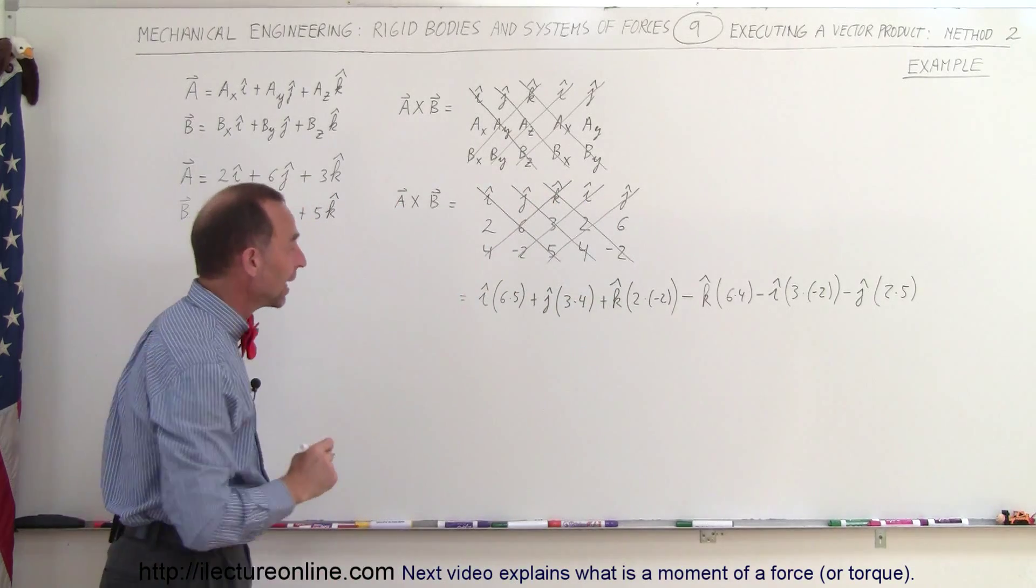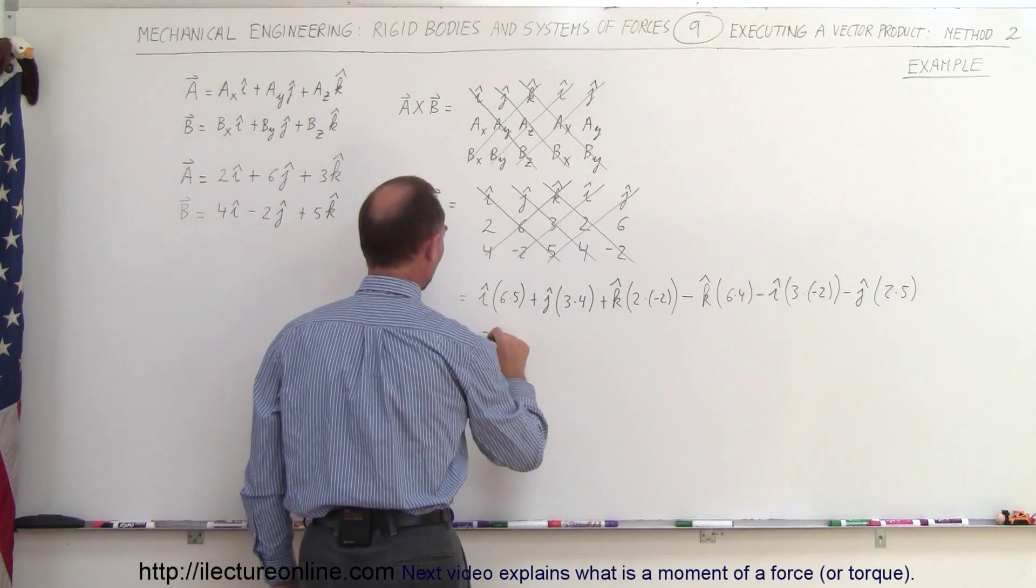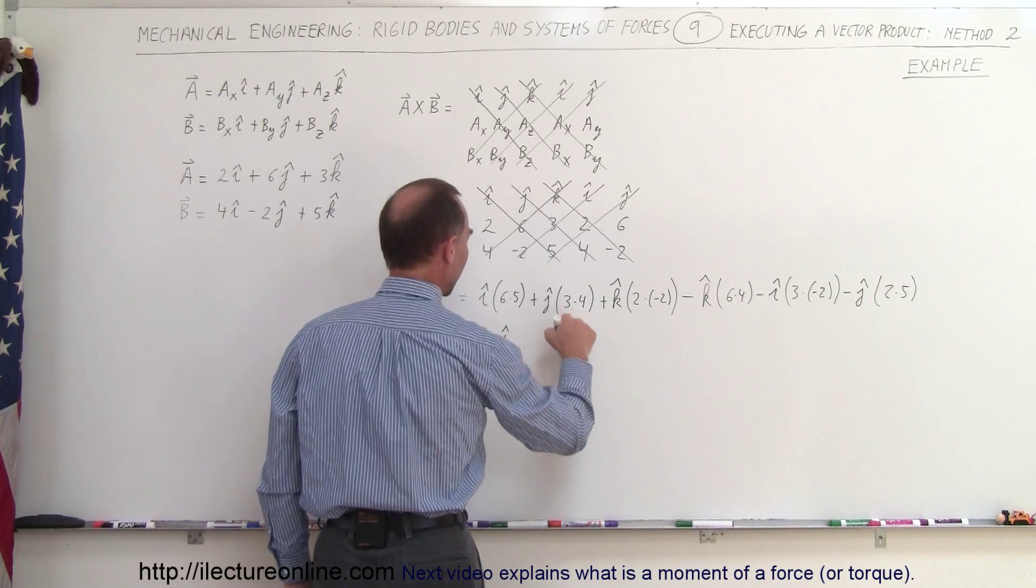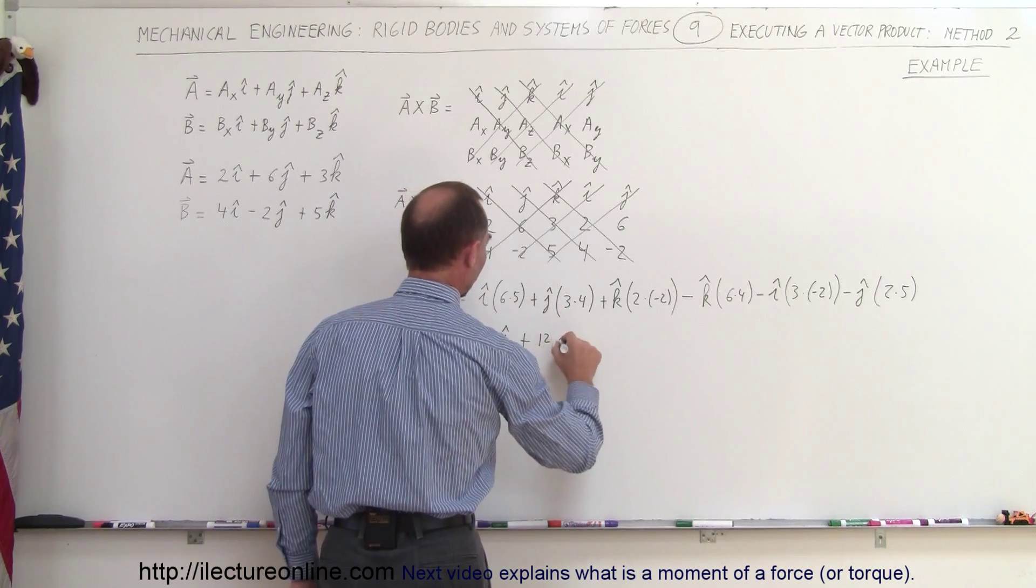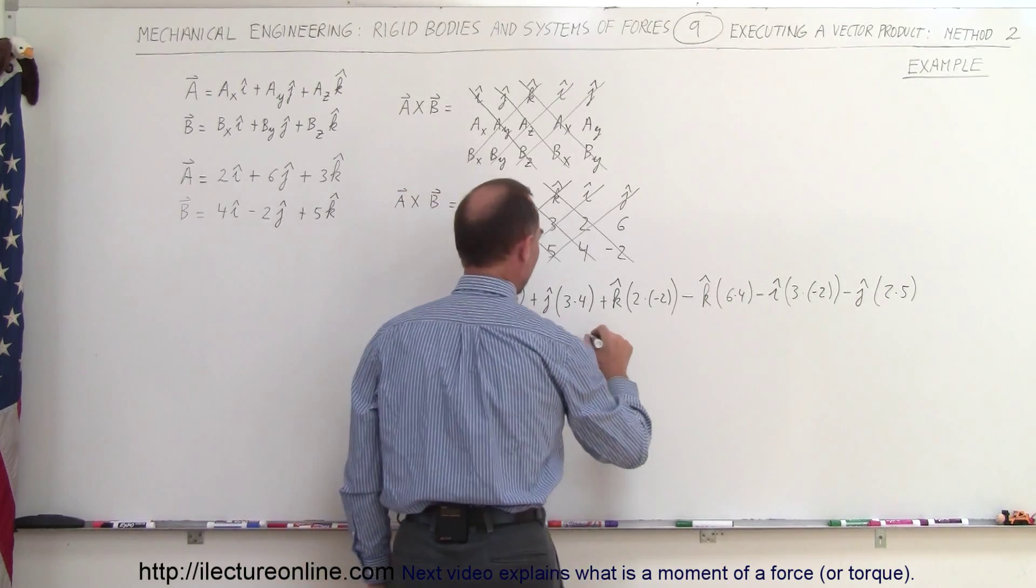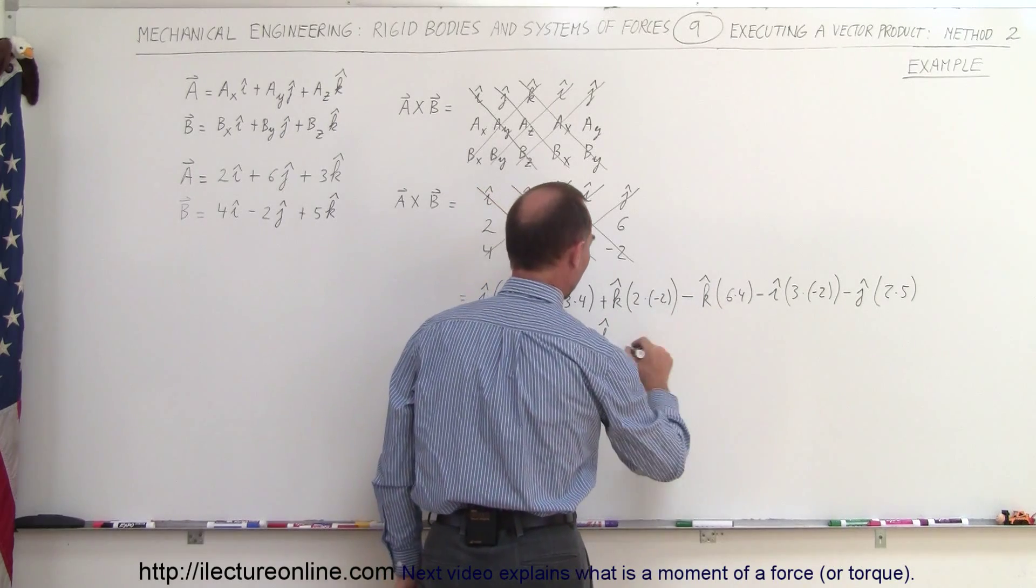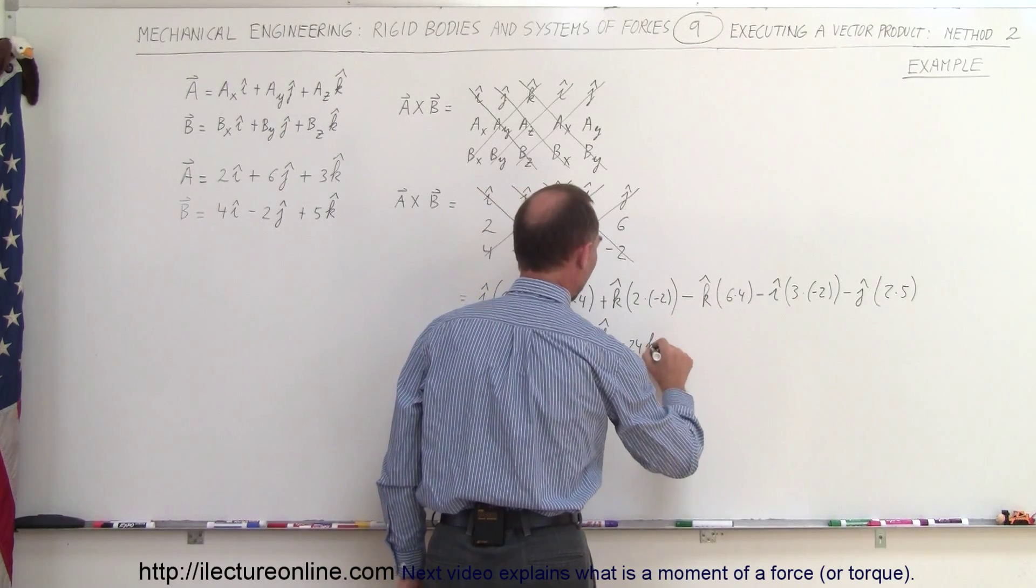Now let's simplify and see what we get. So this is equal to 30I plus 12J minus 4K, we get minus 24K.